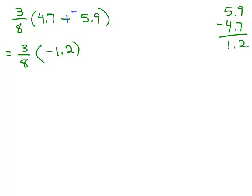Now, at this point, you have a multiplication and there's different ways you can go from here. What you could do is change this negative 1.2 to a fraction or you could change this 3/8 to a decimal. Or what you could do is write this negative 1.2 as negative 1.2 over 1. So I'm going to show you the three ways you might do this problem, all of them valid.